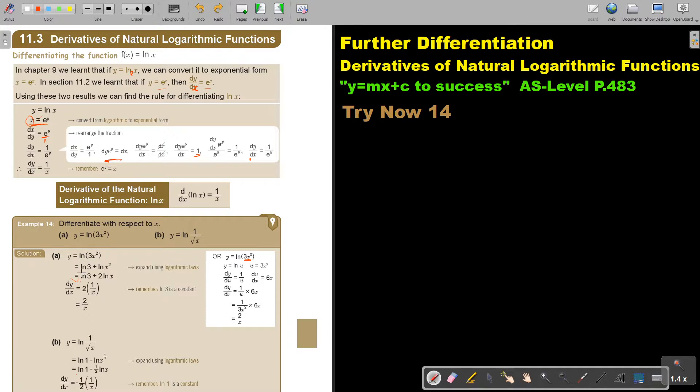So, we separate this. And if we separate it, it will be ln 3 plus ln x squared. Then, I put the two in front. Now, if I differentiate a constant, it's just 0. And if I differentiate this, ln x is 1 over x. There's the two. And I just get 2 over x.